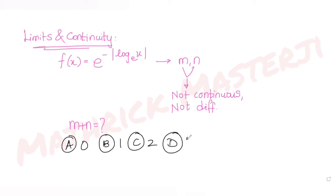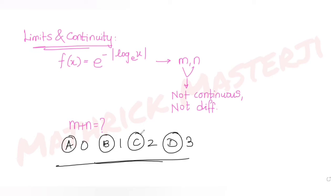So let's figure out the correct answer. We have been given the function which is e raised to negative mod of the natural logarithmic value of x. Before starting with the solution, let me walk you through this step by step.